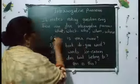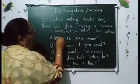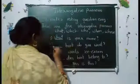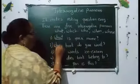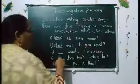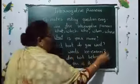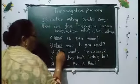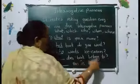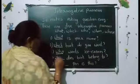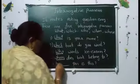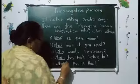Examples of interrogative pronouns: 'Blank is your name?' — What is your name? 'Blank book do you want?' — Which book do you want? 'Blank wants ice cream?' — Who wants ice cream? 'Blank does the book belong to?' — Whom does the book belong to? 'Blank pen is this?' — Whose pen is this?